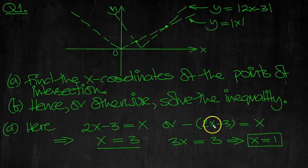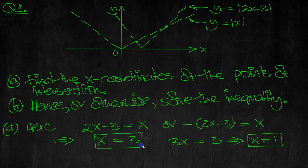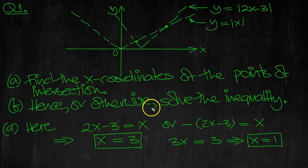If we put x = 1 in here, you'd get 2 minus 3, which is minus 1. Minus minus 1 equals 1, so there's no problem there. And x = 3 is clearly correct. So there are our two solutions.